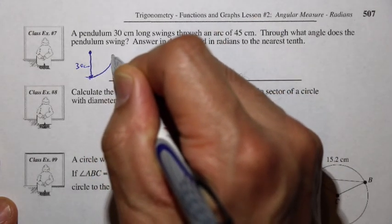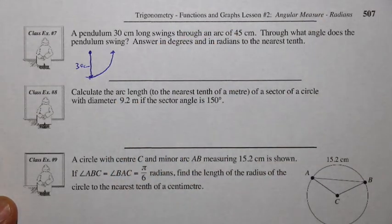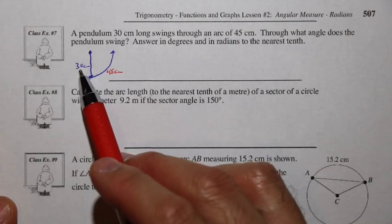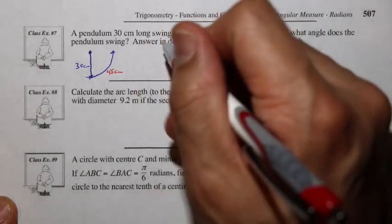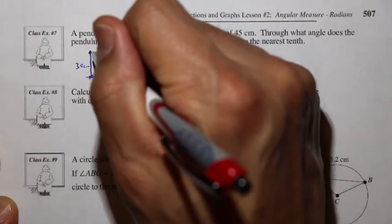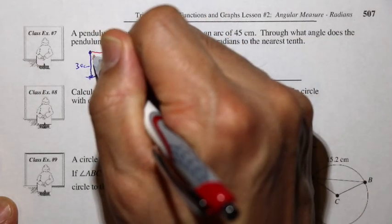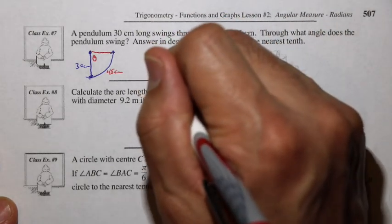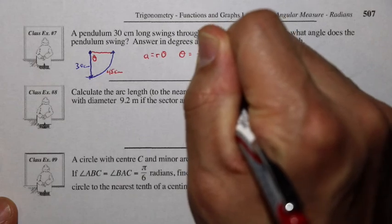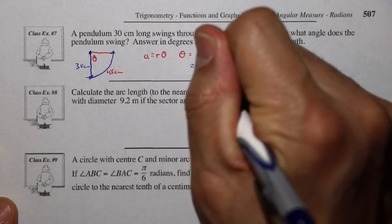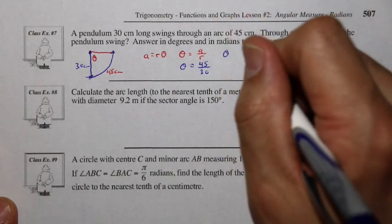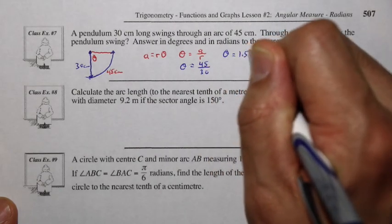The pendulum swings through an arc of 45 centimeters. Notice that 45 is 1.5 times 30 centimeters, so the arc is 1.5 times the length of the radius. Using the formula, theta equals arc length divided by radius. The arc length is 45 centimeters, the radius is 30 centimeters, so the measure of the angle in radians is 45 divided by 30, which is 1.5 radians.